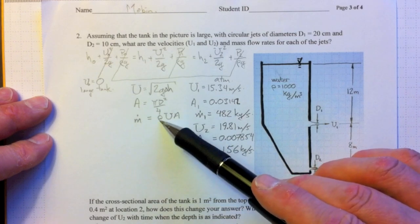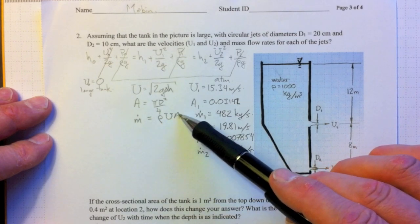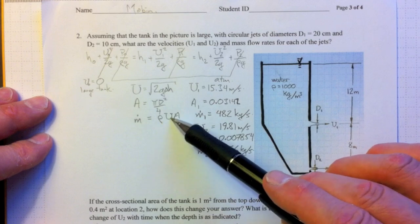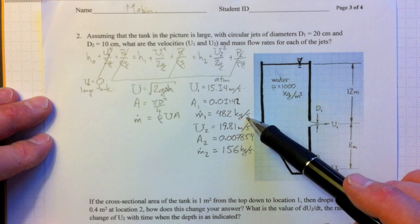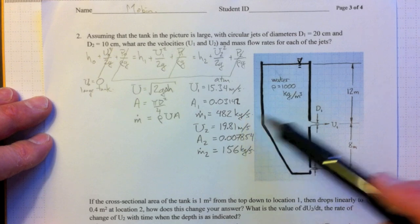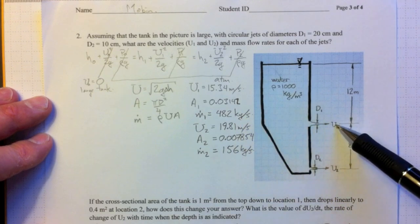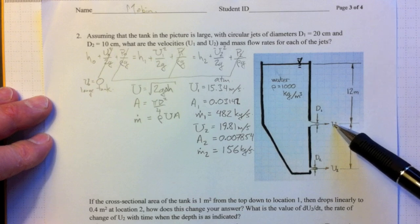Mass flow, rho times average velocity times area, density times velocity times area. Plugging in the numbers, we get 482 kilograms per second coming out at location 1. So almost half a ton per second. That's a lot of water.